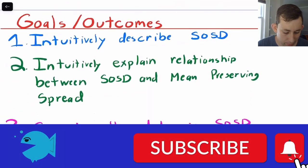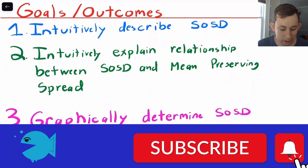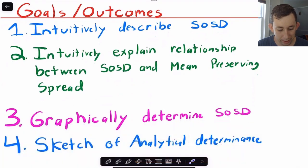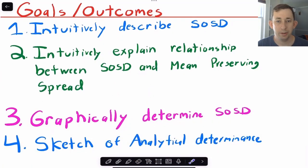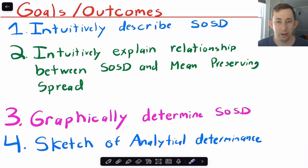What we're going to do is talk about SOSD. Very similar to some of my other videos, we're going to start with an example so that you get the feel for what we're going to do. Then we'll start getting into graphically and analytically determining SOSD, talk about exactly what conditions we need, and then I'll talk about a mean preserving spread and how you can determine if a lottery is a mean preserving spread of another lottery.